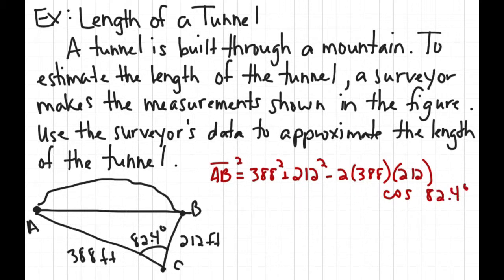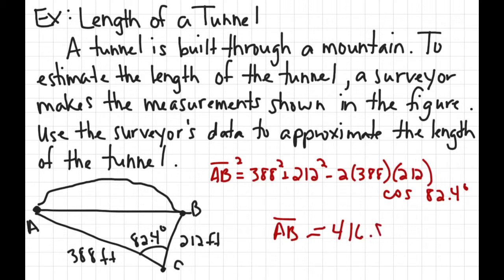When you do this in your calculator, remember that at the end you must take the square root of the answer because the side found using the law of cosines is already squared. Plugging in and taking the square root, length AB is approximately 416.8, or about 417 feet long.